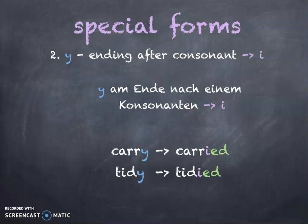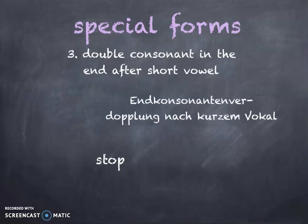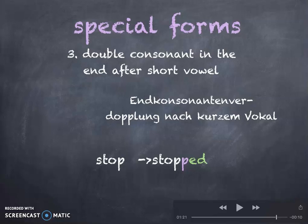The last special form is when you have a verb like 'stop'. 'Stop' has a consonant at the end, and that consonant is after a short vowel. When you have a short vowel followed by a consonant at the end, you have to double the consonant. So in 'stop', the final consonant is 'p', and in the simple past you have 'stopped' — please notice the double 'p' — and then 'ed' is added.